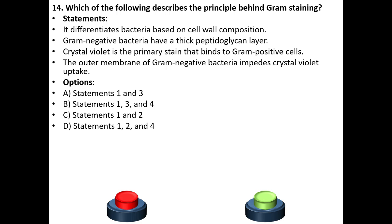Fourteenth question. Which of the following describes the principle behind gram staining? Statements: It differentiates bacteria based on cell wall composition. Gram-positive bacteria have a thick peptidoglycan layer. Crystal violet is the primary stain that binds to gram-positive cells. The outer membrane of gram-negative bacteria impedes crystal violet uptake.